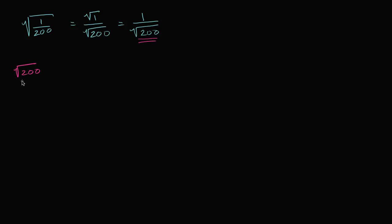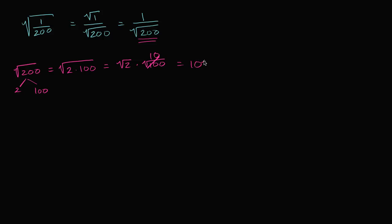You could realize that 100 is a perfect square and it goes into 200. So 200 is the same thing as two times 100, and the square root of 200 is the square root of two times 100, which equals the square root of two times the square root of 100. Since the square root of 100 is 10, that gives us 10 times the square root of two, or 10√2.